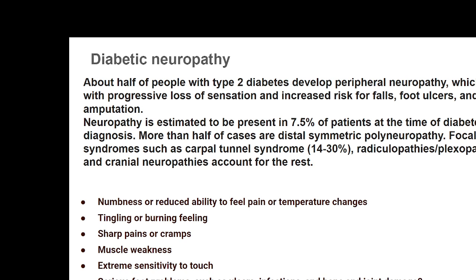Neuropathy is present in more than 7.5% of patients at the time of diabetes diagnosis — meaning it is a presenting feature. Interestingly, in Ayurvedic textbooks, 'Karacharana Daha' is considered a purvarupa of Prameha. In Ayurveda this is described as a precursor, yet even with advanced screening today, many patients are diagnosed with diabetes based on neuropathy signs. The usual presentation is symmetric polyneuropathy — similar symptoms in both limbs.